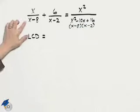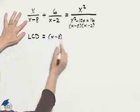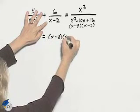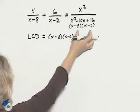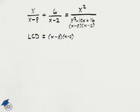So the LCD has to contain x minus 8, has to contain x minus 2, and it has to contain x minus 8 times x minus 2, which we already have, so our LCD is as given.